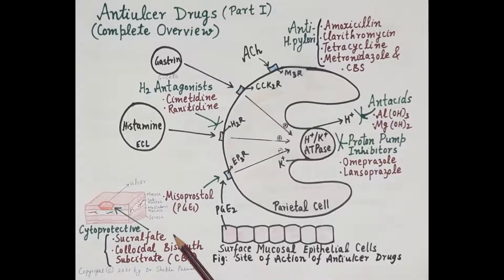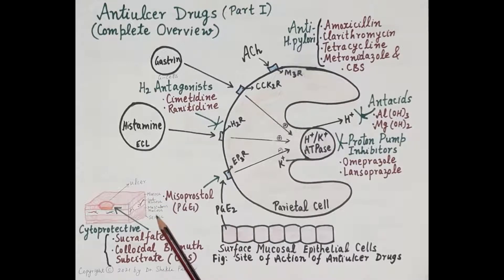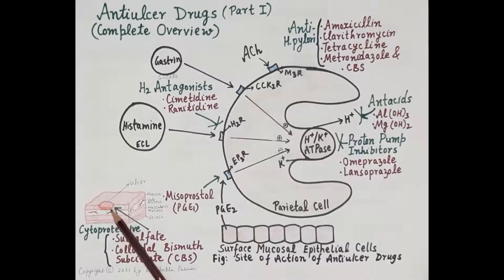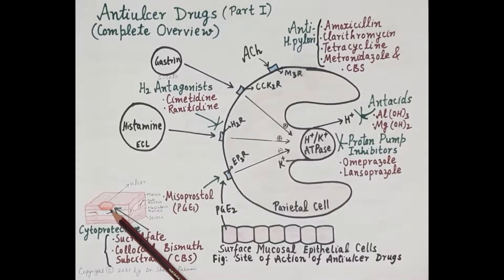Examples of cytoprotective agents are sucralfate and colloidal bismuth citrate. This diagram shows the layers of the wall of the stomach: the innermost mucosa, then submucosa, muscularis mucosa, and the outermost serosa. It also shows a gastric ulcer — a lesion in the mucosa. Drugs like sucralfate and colloidal bismuth citrate form a coating over the ulcer base, protecting the ulcerative tissue from the corrosive effect of acid, the proteolytic effect of pepsin, and the harmful effect of bile.